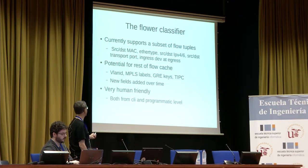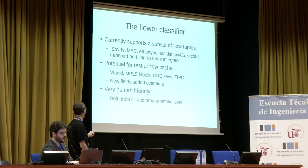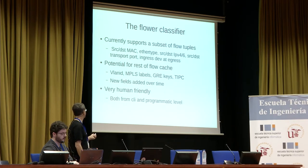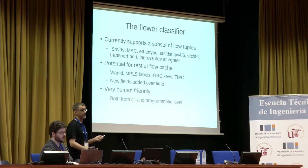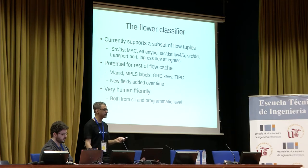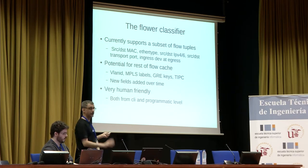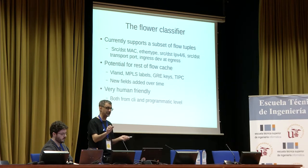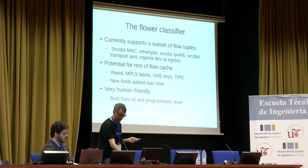Flower currently supports source/destination MAC, ether type, source/destination IP, source/destination transport port, ingress port, and which port it came in on if routed or switched. There are also flow cache attributes not yet used — MPLS labels, VLAN IDs, GRE keys, and even TIPSY. As new fields are added over time to the flow cache, Flower should be able to make use of them. It's a very nice, very human-friendly classifier — people who are complaining about TC not being friendly will like Flower.